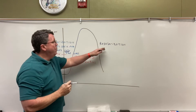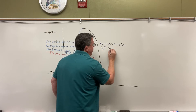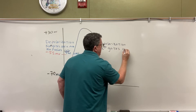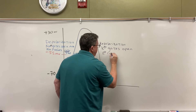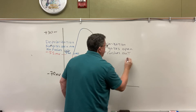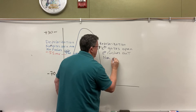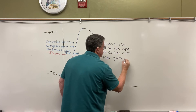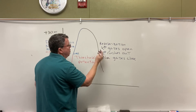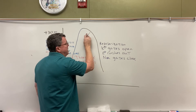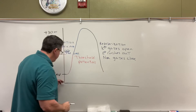Now in repolarization, my potassium gates open and potassium rushes out. At the same time, my sodium gates close. So my sodium gates close and my potassium gates open — potassium goes rushing out — which brings the voltage back down basically to resting potential.